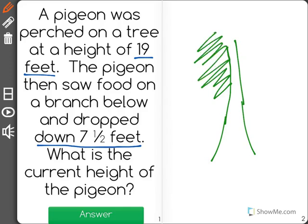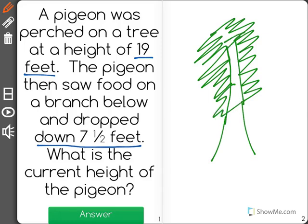And right at the start of the problem, the pigeon is located at a height of 19 feet. So we'll just draw, I'm just going to write P for pigeon because I can't even draw a pigeon. So here's where the pigeon starts, 19 feet.